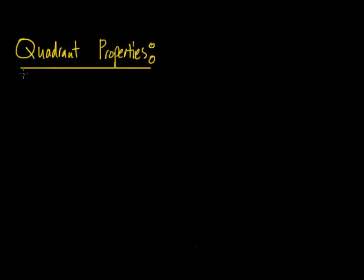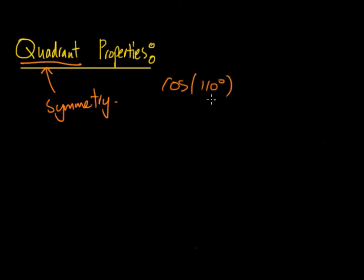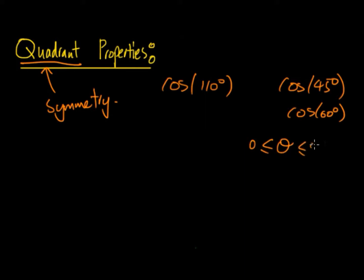In this video we're going to be looking at the quadrant properties. This is in reference to the circle and the different circular functions of sine, cos and tan. These are often called the symmetry properties. We're going to look at how we can work out angles such as cos 110 degrees, as we know how to work out angles such as cos 45 or cos 60. We've only looked at how to calculate angles between 0 and 90, but now we're going to extend this using these symmetry or quadrant properties to work out other angles outside this range that still relate to the exact values we've already learnt.